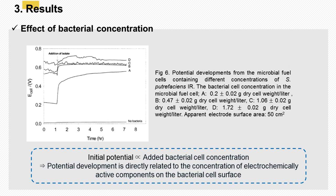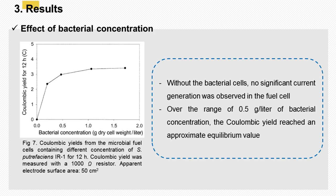To check the effect of bacterial concentration, microbial fuel cells were prepared using different cell concentrations of S. putrefaciens IR-1. The potential development from the fuel cells was recorded separately before and after the addition of fuel. The initial potential was proportional to the added bacterial cell concentration. This result implies that the potential development is directly related to the concentration of electrochemically active components on the bacterial cell surface. Additional experiments were carried out to explore the relationship between bacterial concentration and coulombic yield. Over the range of 0.5 gram per liter of bacterial concentration, the coulombic yield reached an approximate equilibrium value. Without the bacterial cells, no significant current generation was observed.